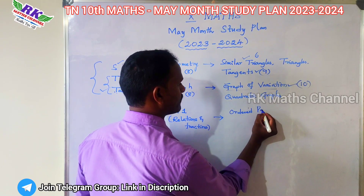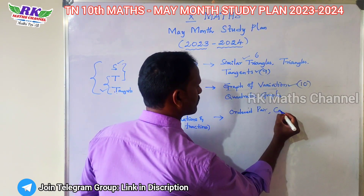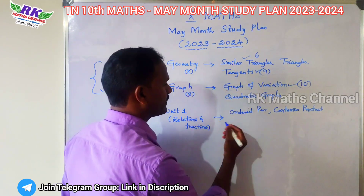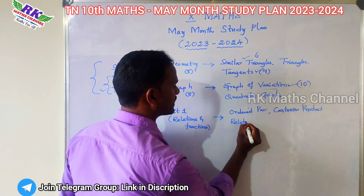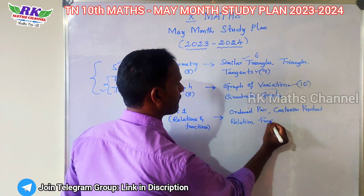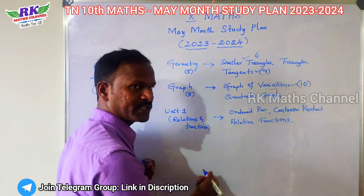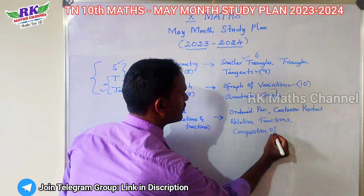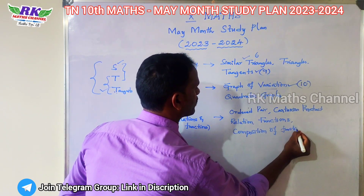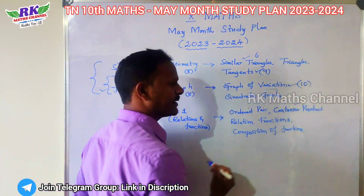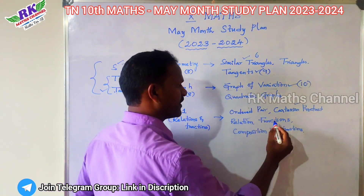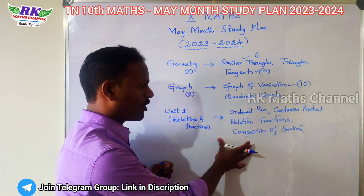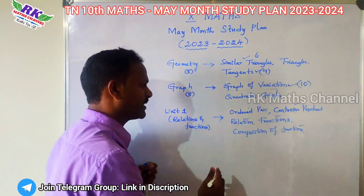First lesson covers: ordered pair, Cartesian product, next relation, functions, relations and functions, and composition of functions. These are the first lesson topics. Cartesian product is worth one five-mark question, functions and composition of functions are key topics in the first lesson.